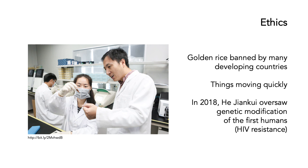You can't talk about this topic without at least touching on the idea of ethics. Golden rice, for instance, which we talked about earlier in this presentation, is banned by many developing countries, but it has also been approved by others, such as the Philippines. Things are moving very quickly and people have very strong views on what we should or should not be doing with genetically modified organisms. In 2018, He Jiankui oversaw genetic modification of the first humans — he took two twins in China and changed their DNA code so that they would be resistant to HIV. This was incredibly contentious. We have now hit a situation where the first genetically modified humans have been made, and there are very strong views about whether that is a good thing or a bad thing.